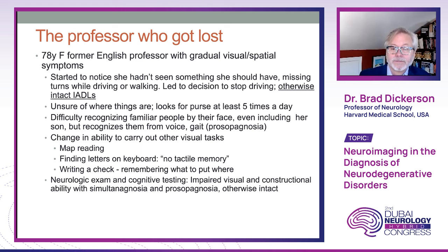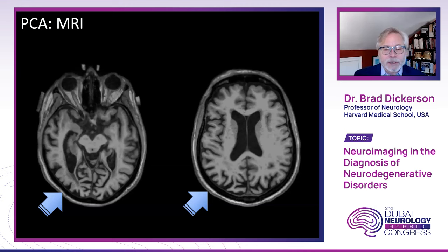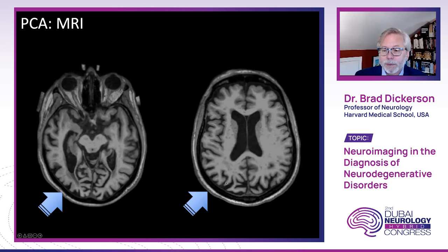Our diagnostic formulation was mild cognitive impairment with a visual predominant non-amnestic syndrome and progressive visuospatial PCA syndrome — her memory was excellent. On MRI, axial images showed atrophy in the occipitotemporal cortex with widened sulci, more so on the right than the left, and occipitoparietal atrophy also more prominent on the right, both medially and laterally, with relatively intact cortex throughout the rest of her brain, including the medial temporal lobe.